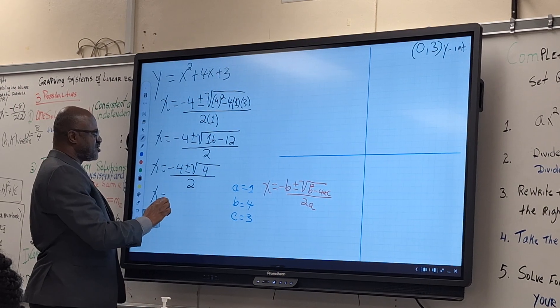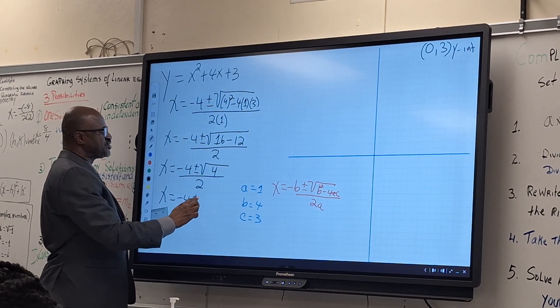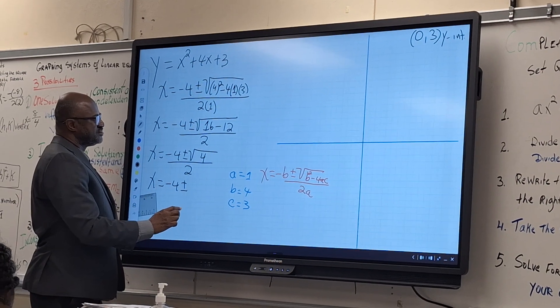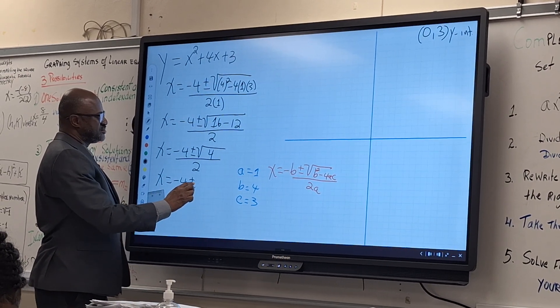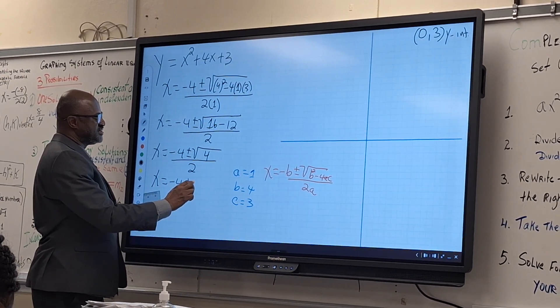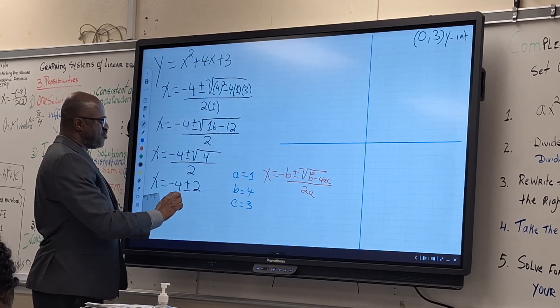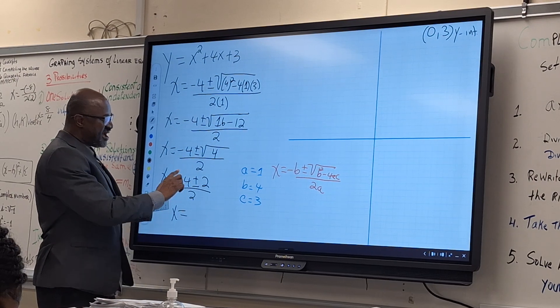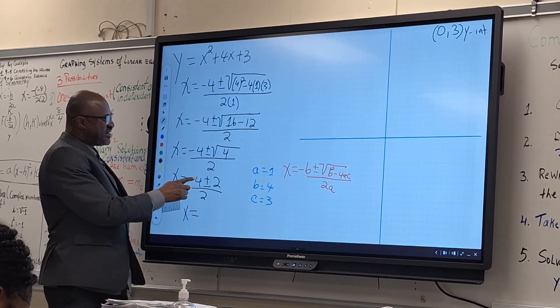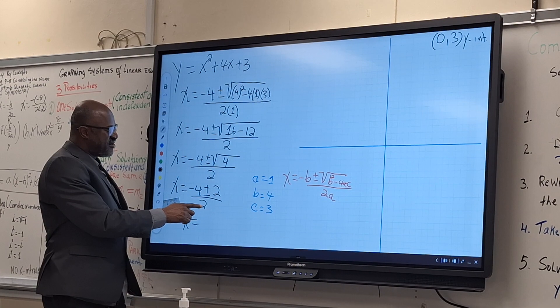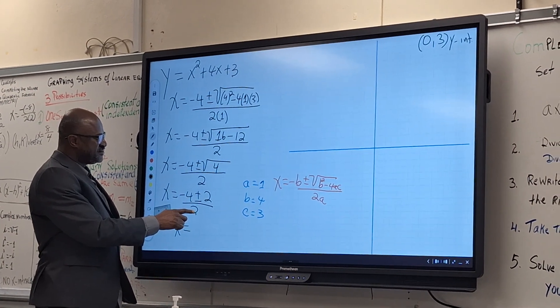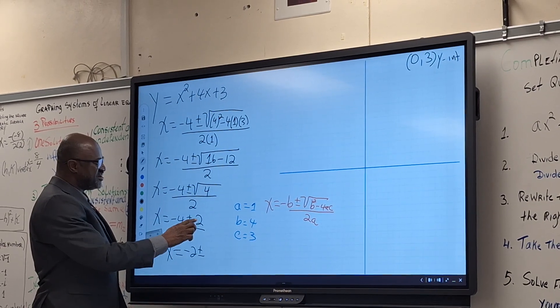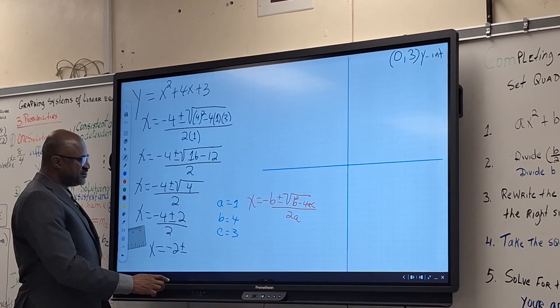Now we have x equal minus four plus or minus, what is square root of four? Two. Over two. So this is an easy one, they have two in common. We can simplify that. What is negative four divided by two? That will be negative two plus or minus one.